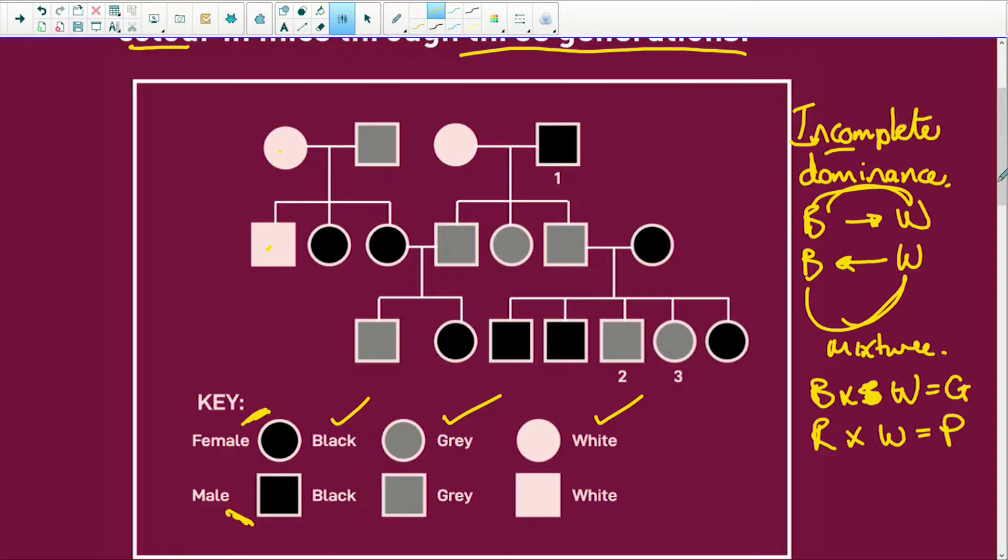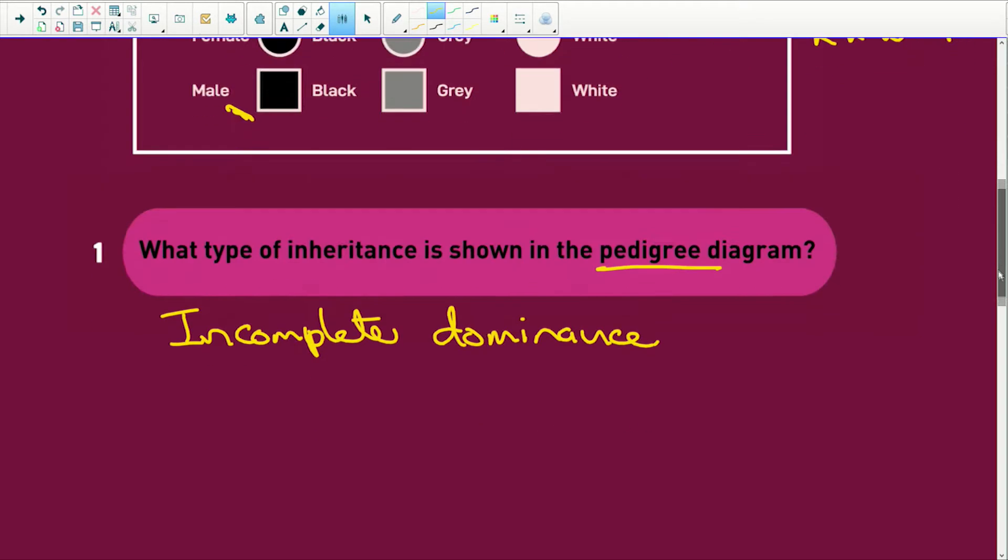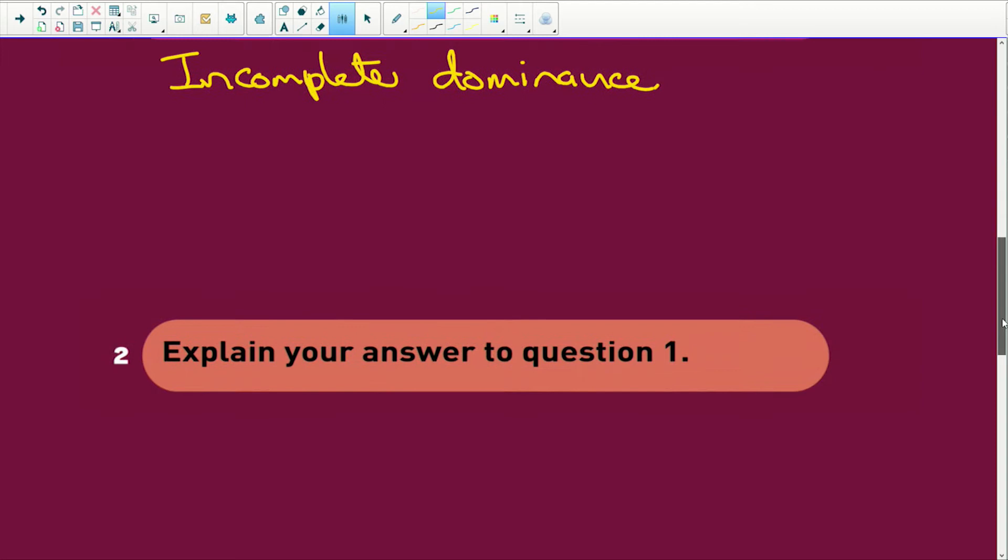So let's check out questions. It says, what type of inheritance is shown in this pedigree diagram? We know it is incomplete dominance. All right. So, explain your answer.